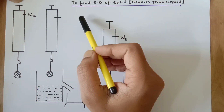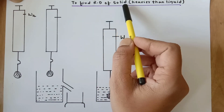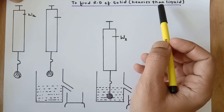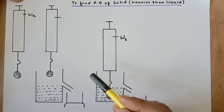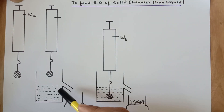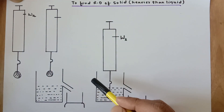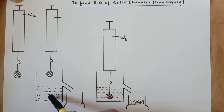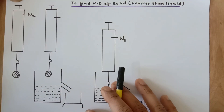In this video we are going to find the relative density of a solid which is heavier than the liquid with respect to any liquid. Usually we do this experiment using Archimedes principle with the help of water, but you can use any liquid.